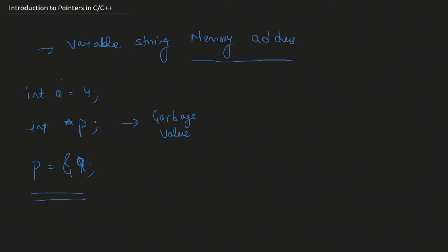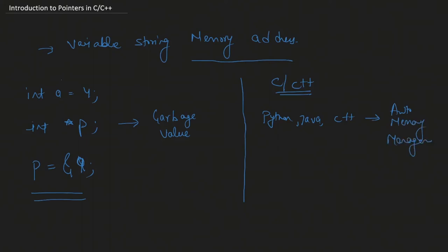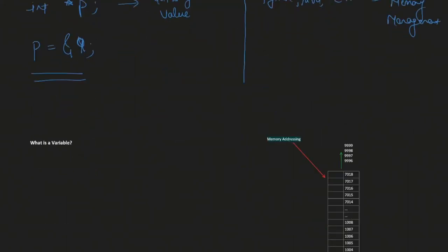Pointers are extremely powerful because they are the only ones in the entire language who can help us access memory locations. We mainly talk about pointers in C and C++ because they are used in these two languages. Advanced languages such as Python, Java, and C# have automatic memory management, so they don't need pointers at all. In this session we'll only consider C and C++ when talking about pointers.